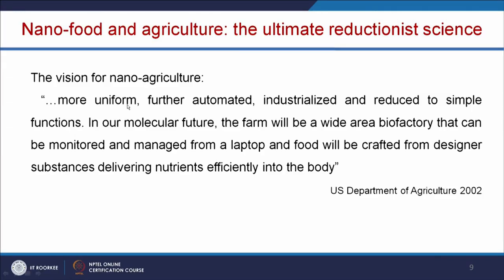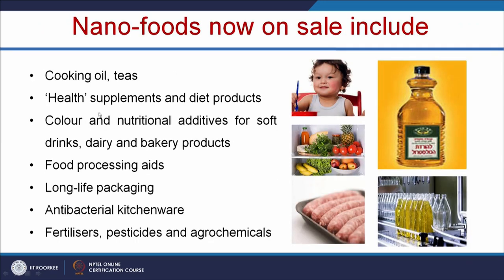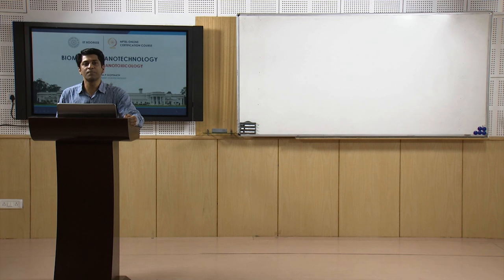Nano can also play a major role in agriculture, making it more uniform, automated, and industrialized, though this could cause farmers to lose farming knowledge. It can deliver nutrients efficiently into the body. Nano foods on sale include cooking oils, teas, antibacterial kitchenware, food processing and food packaging materials. Nano-based food packaging materials interact with food to prevent microbial growth, but this nanomaterial is also interacting with the food substance — how much nanoparticle is released into the food and what happens when you consume it is not thoroughly understood.